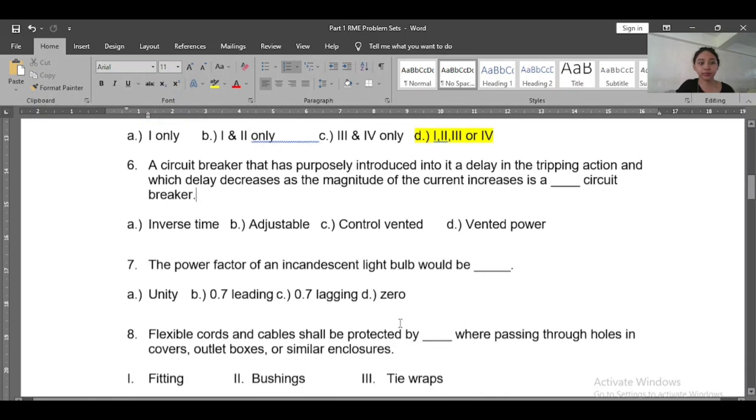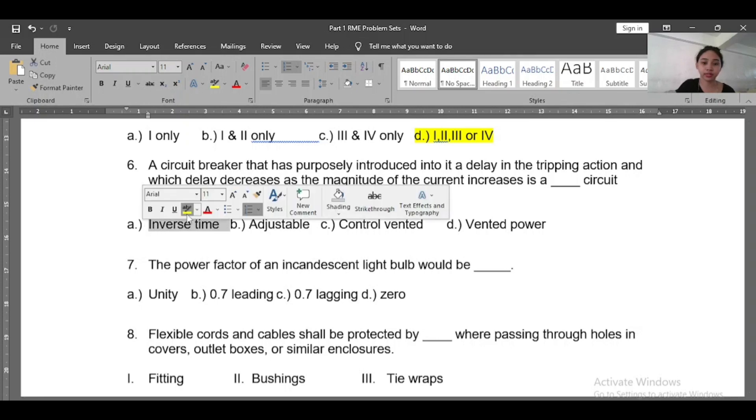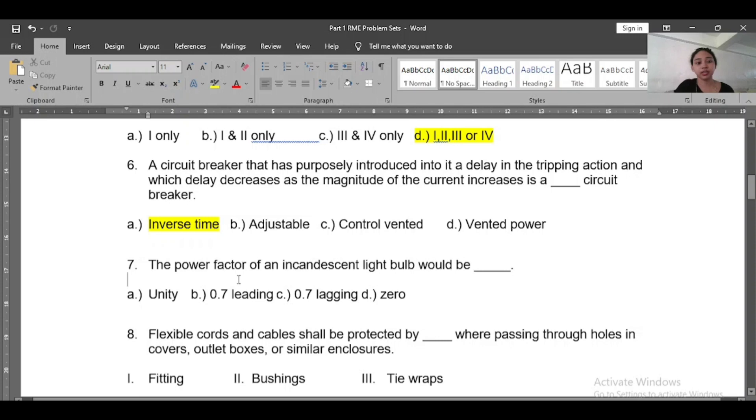Number six: A circuit breaker that has purposely introduced a delay in the tripping action, and which delay decreases as the magnitude of the current increases, is a blank circuit breaker. So what is this? A circuit breaker that delays in tripping action - this is an inverse time circuit breaker.